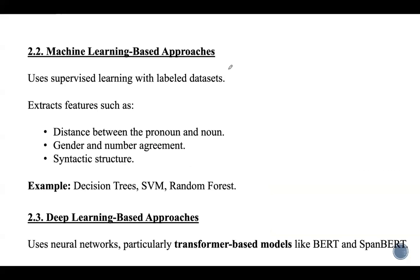The second technique is machine learning-based approaches, which use supervised learning with labeled datasets. Features extracted include distance between the pronoun and noun, gender and number agreement, and syntactic structure. Best examples of machine learning-based approaches include decision trees, support vector machines, and random forests.